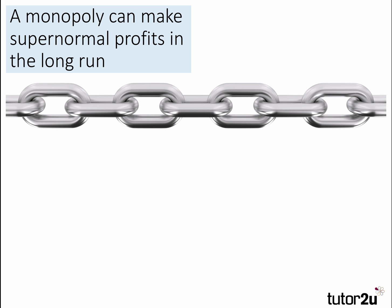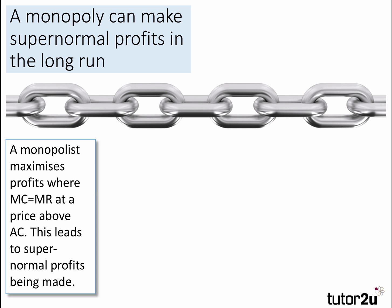We might be asked to explain how a monopoly can make supernormal profits in the long run. Here are our chains of reasoning. First of all, a monopoly maximizes profits where marginal revenue equals marginal cost, and they can do so because they have pricing power at a price above average cost. So if the equilibrium output is where MC equals MR and price is above average cost, this leads to supernormal profits being made.